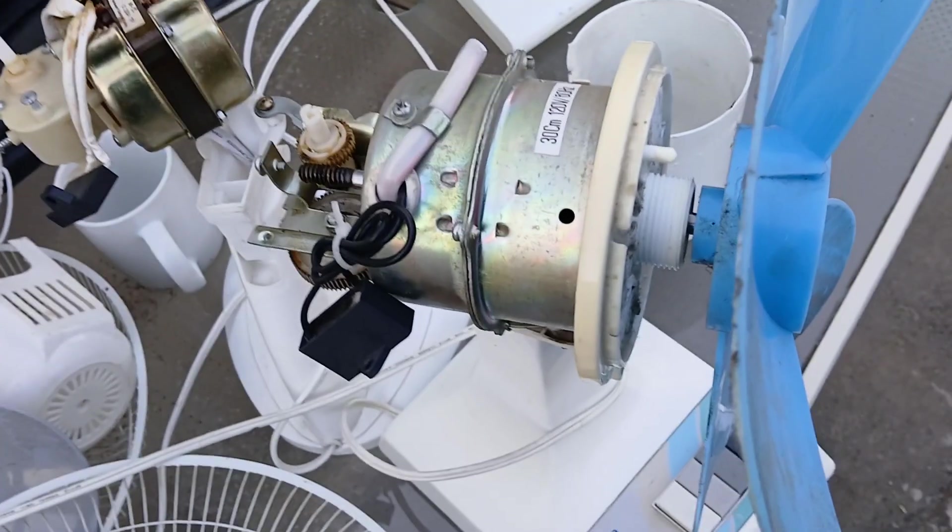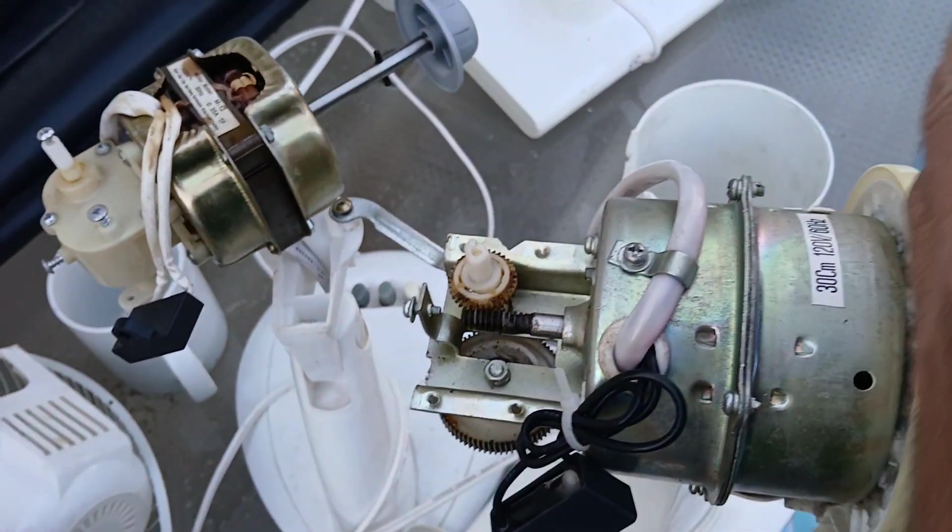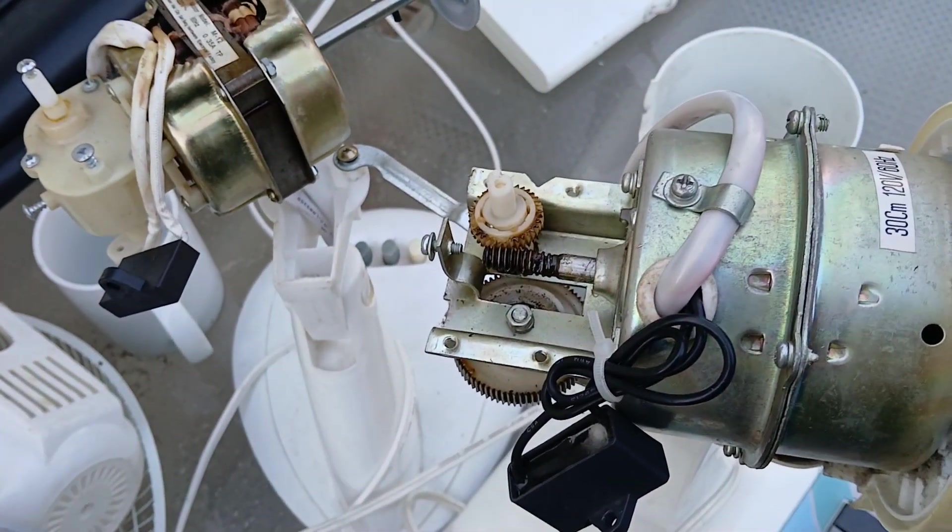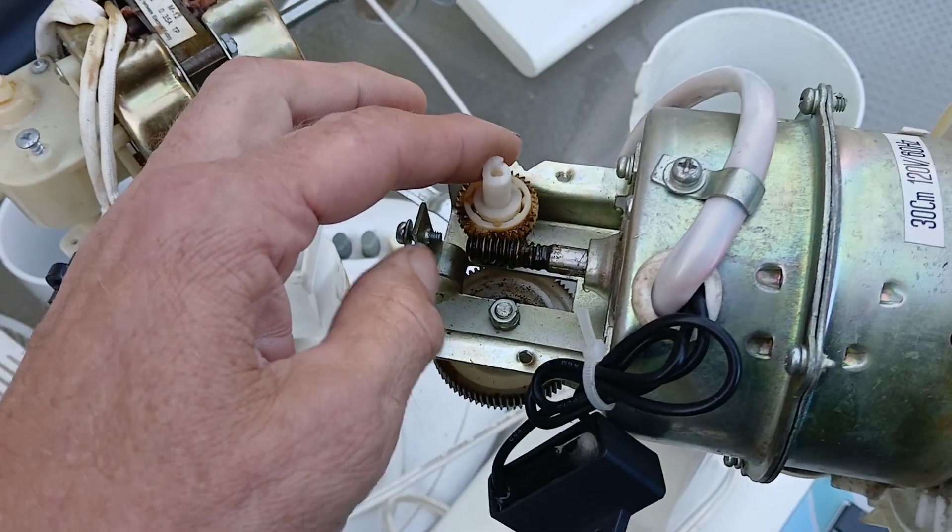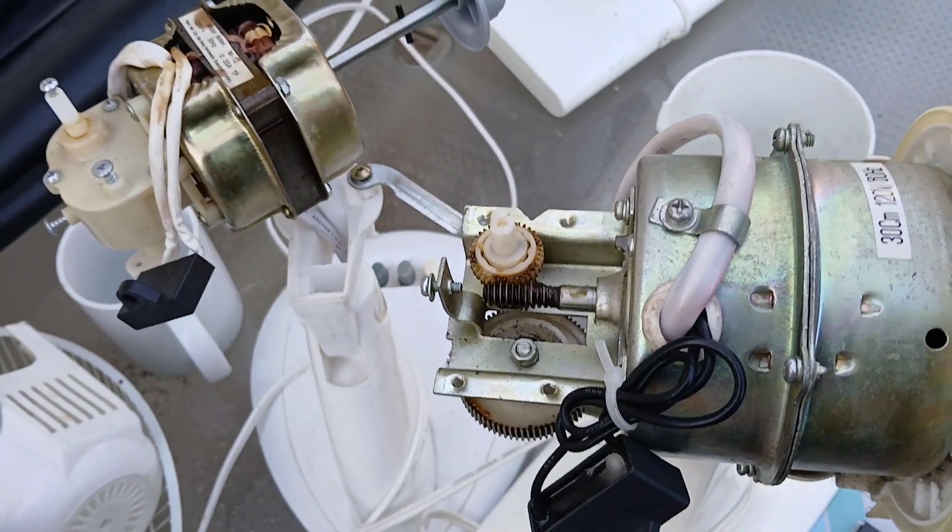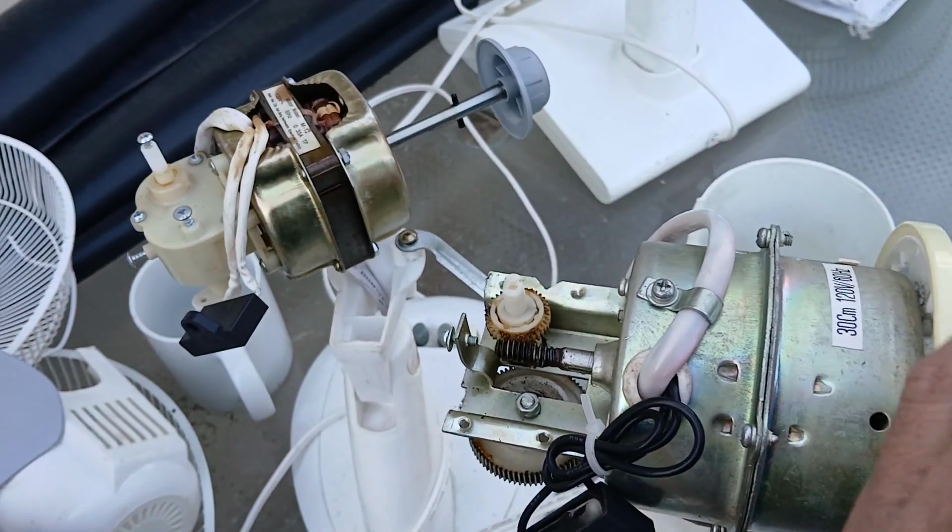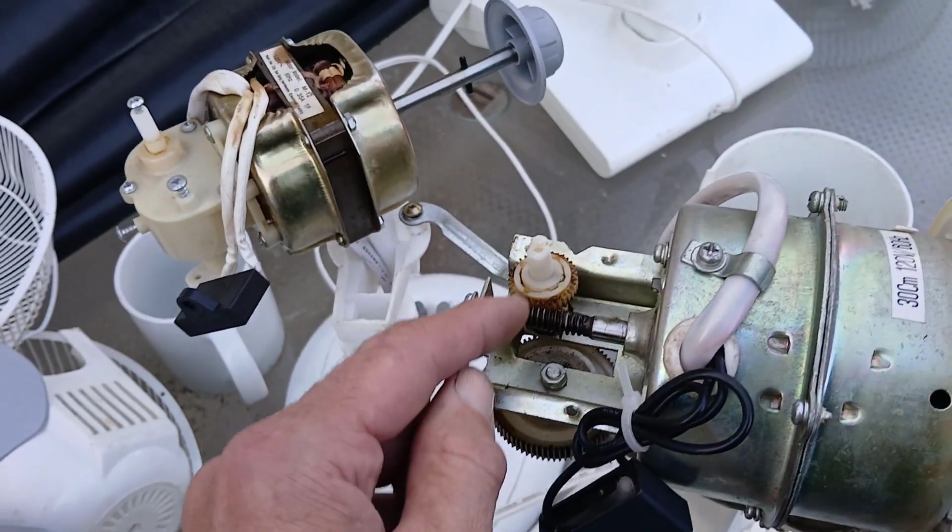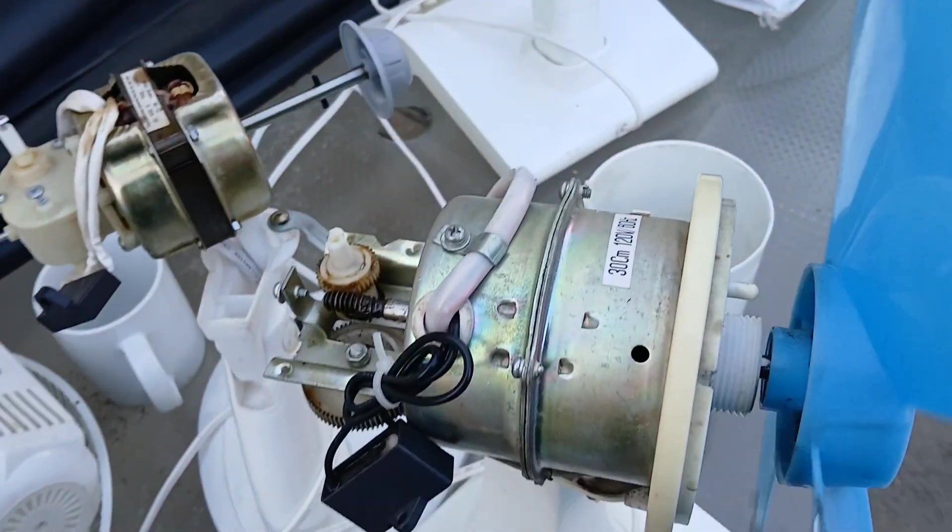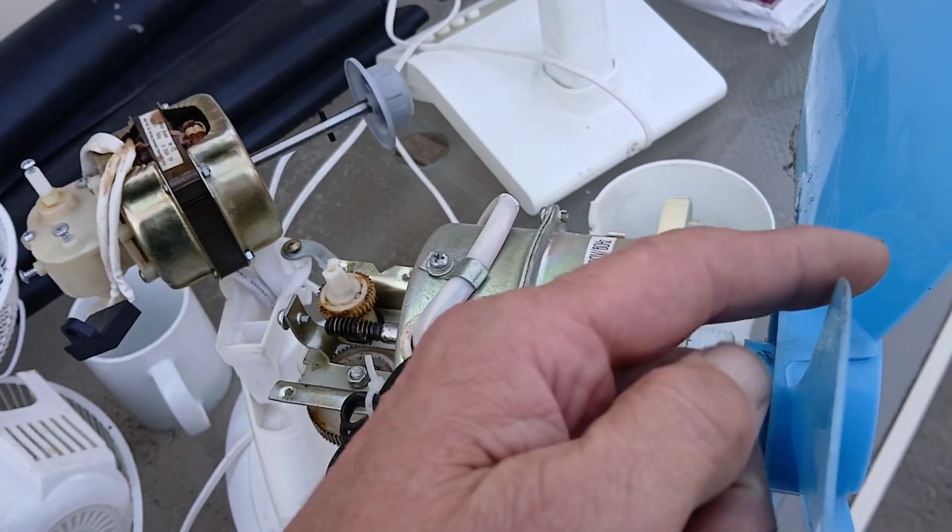As some of you probably know, a fan has a worm gear on the back that turns things, and this is it here. So when it rotates, the two gears mesh and it turns slowly. And I was thinking of using something like this,